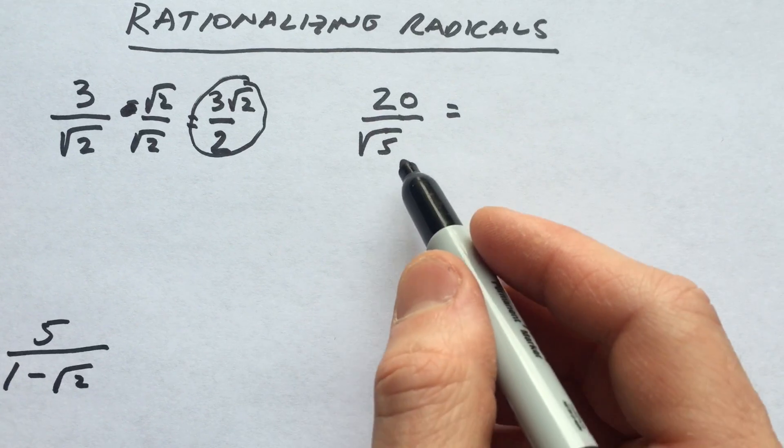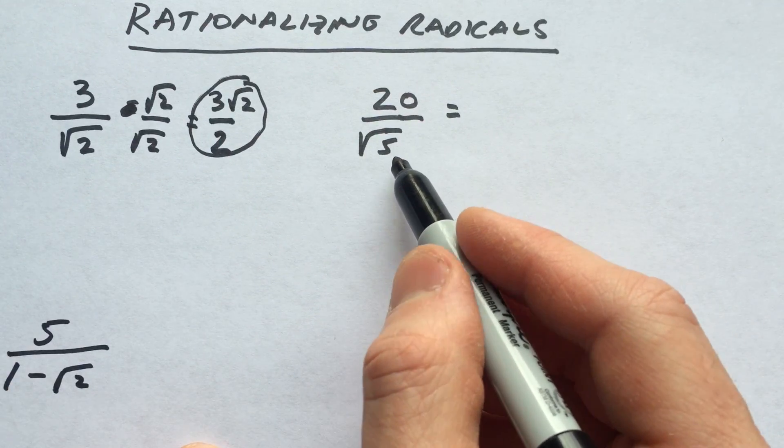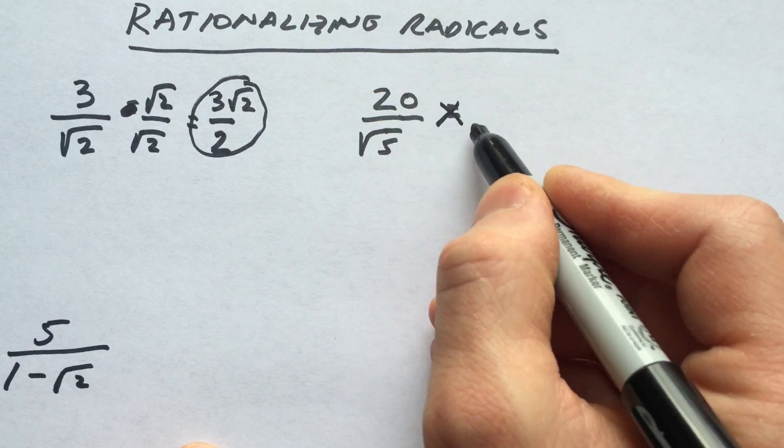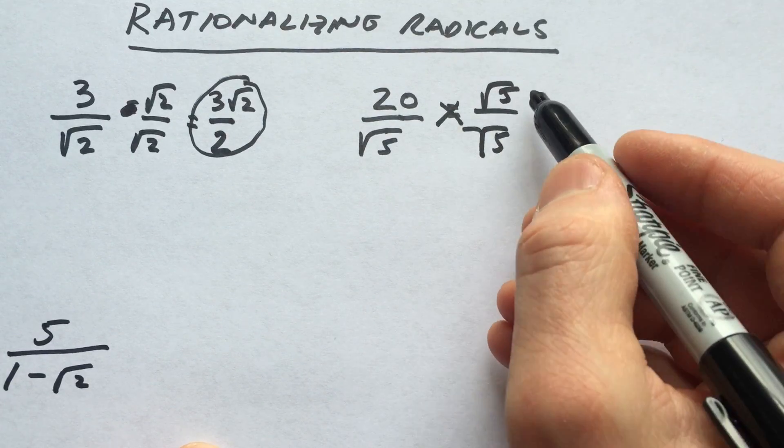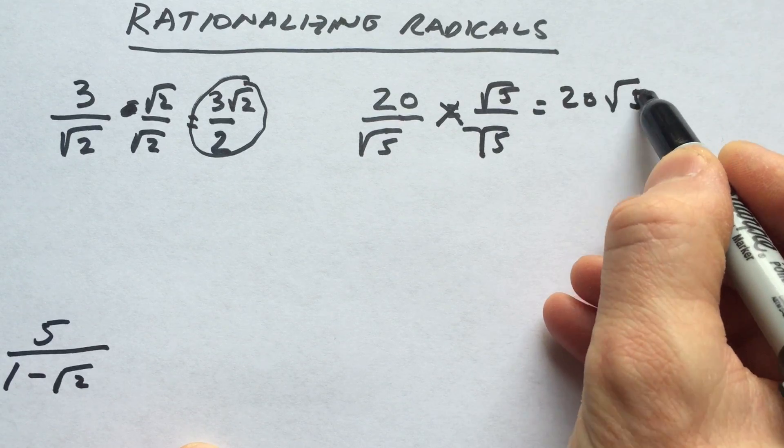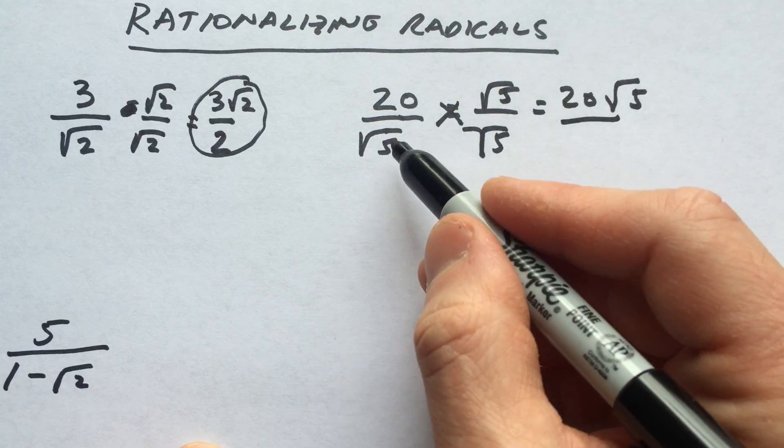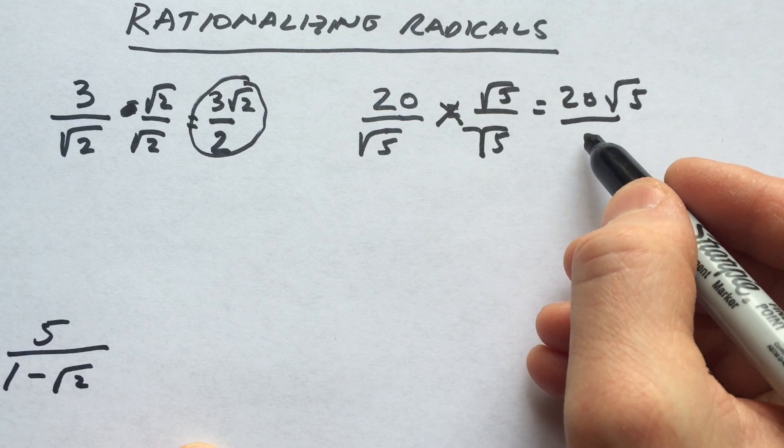Let's do another example. Here we've got 20 divided by the square root of 5. We're going to multiply by the square root of 5 to the numerator and denominator. That gives us 20√5, all divided by the square root of 5 times the square root of 5, which is the square root of 25.